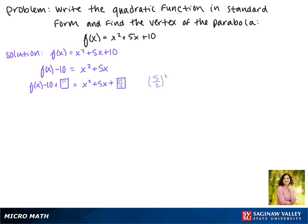So we're going to add 25/4 to each side. Now making common denominators, this negative 10 becomes -40/4 plus 25/4. Then factoring the trinomial on the right, we get (x + 5/2)².